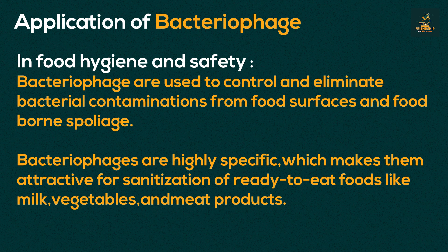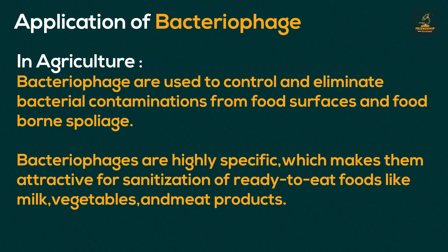The second application is in food hygiene and safety. Bacteriophages are used to control and eliminate bacterial contamination from food surfaces and prevent food spoilage. They are highly specific, which makes them attractive for sanitizing ready-to-eat foods like milk, vegetables, and meat products. The third application is in agriculture, where bacteriophages specific to plant bacteria are used for the treatment and prevention of bacterial diseases in plants. Their use in place of antibiotics prevents the buildup of antibiotics on the plant surface, which might otherwise be harmful to consumers.